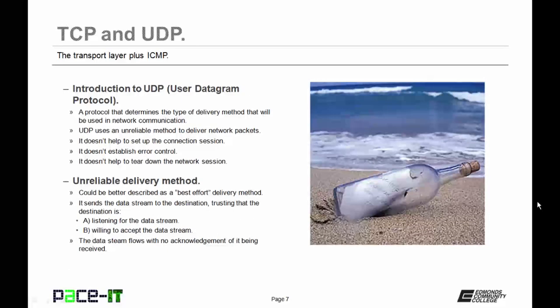Now let's talk about UDP, or User Datagram Protocol. It's a protocol that determines the type of delivery method that will be used in network communication, just like TCP. Unlike TCP, UDP uses an unreliable method to deliver network packets. It does not help to set up the connection session, does not establish error control, and does not help to tear down the communication session. It uses an unreliable, or best effort, delivery method. It sends the data stream to the destination, trusting that the destination is listening for the data stream and willing to accept it. The data stream flows with no acknowledgement of it being received.